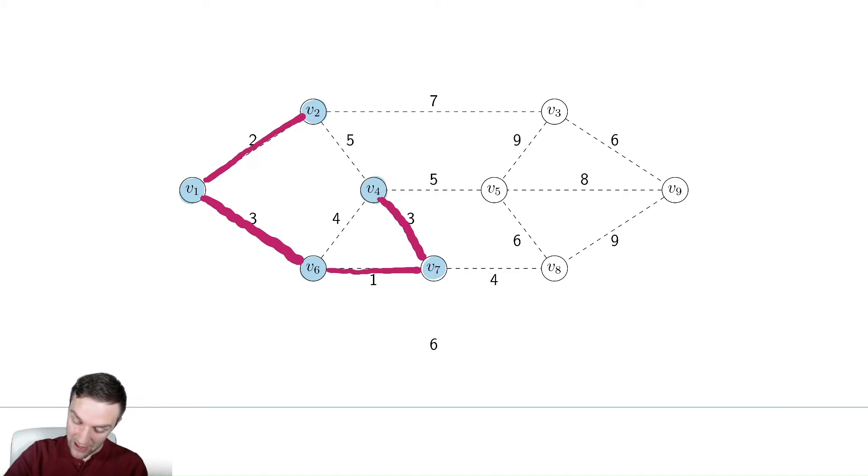Now we have, as before, seven. We no longer care about this five actually, that's kind of nice. We no longer care about this four, that's kind of nice. So we have seven, five, and four. Four is the winner of that battle. And we add v8 to the minimum spanning tree.